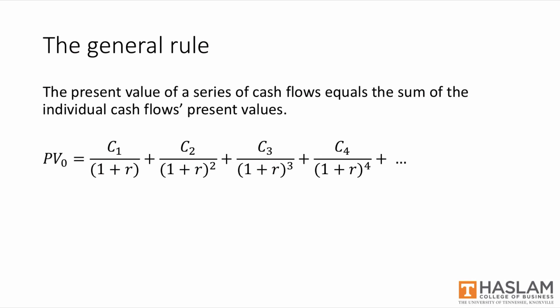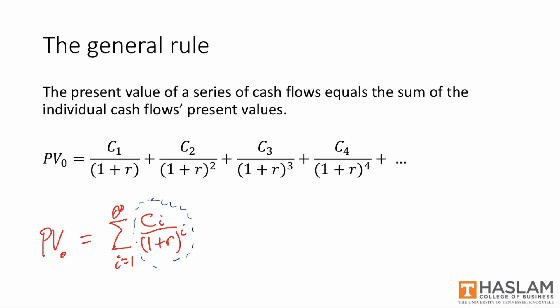Just so you won't be caught off guard, I want to mention that this formula is often expressed in summation notation. This notation simply says to take the expression and insert all values for i between 1 and infinity, then add up the terms. In other words, that expression says to do exactly what we've been doing — summing each individually discounted cash flow.